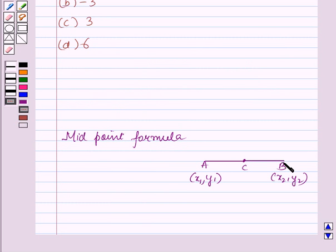If AB is the line segment with C as the midpoint, and the coordinates of A are (x₁, y₁) and coordinates of B are (x₂, y₂),